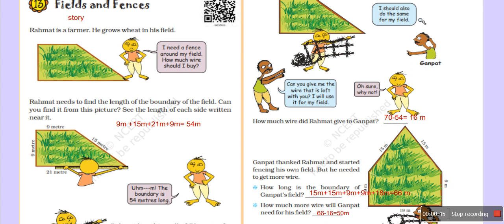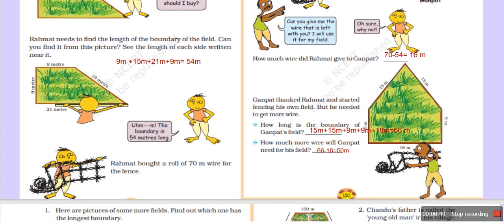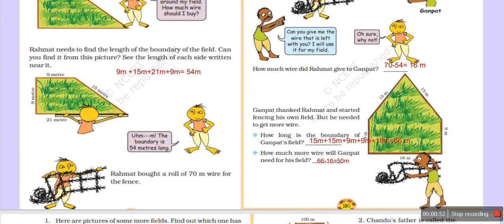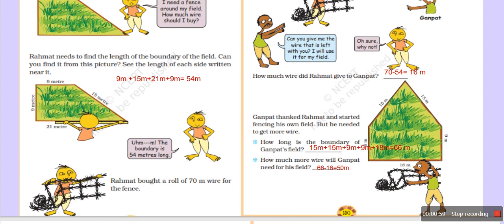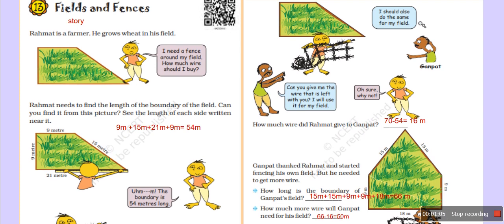He has 54 meters of fence for the field. When he goes to the market, he finds 70 meters of wire available. If you have wire, you can cut it — you don't have to take all of it. Generally, people do this with wire sales, so they will cut it to the required length.